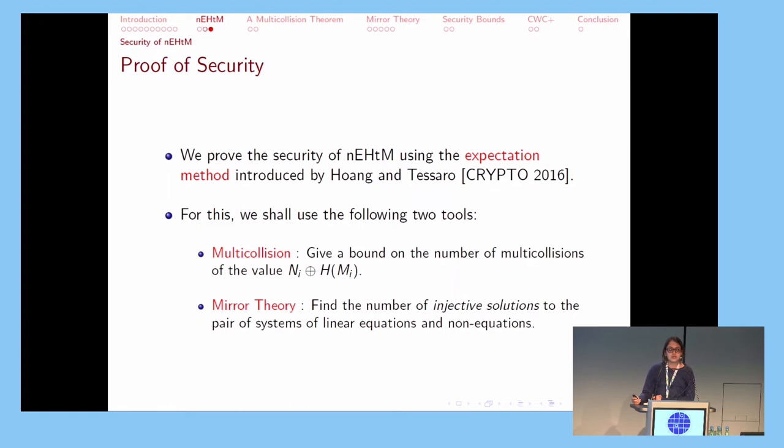We prove the security of our construction using the expectation method introduced by Hoang and Tessaro. This is a generalization of the coefficient H technique. We use the two tools that I've already mentioned: we bound the number of multicollisions of hash values of messages using a theorem that I shall shortly be presenting, and we also give an extended version of mirror theory for which we provide a partial, diluted proof.